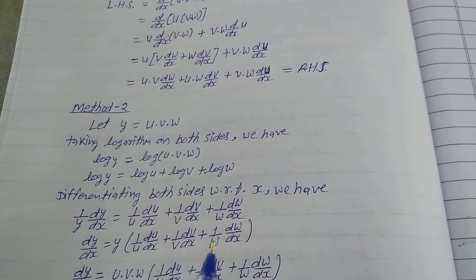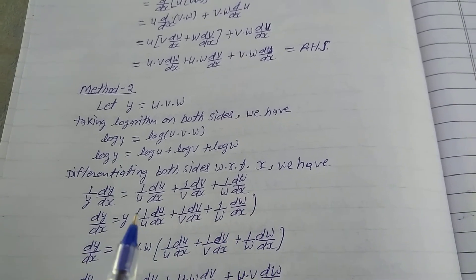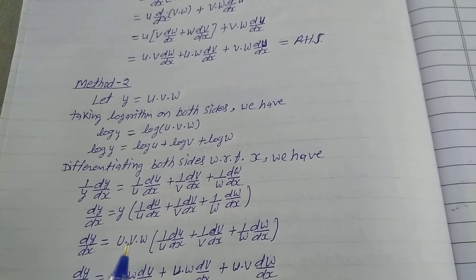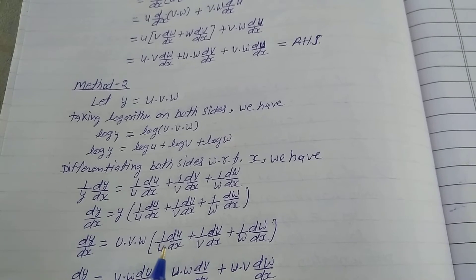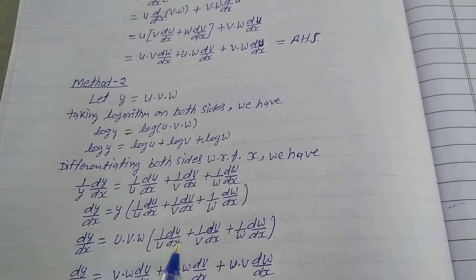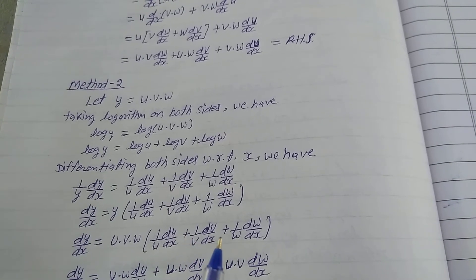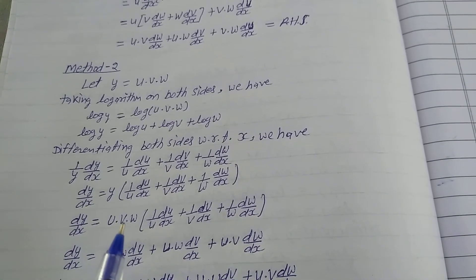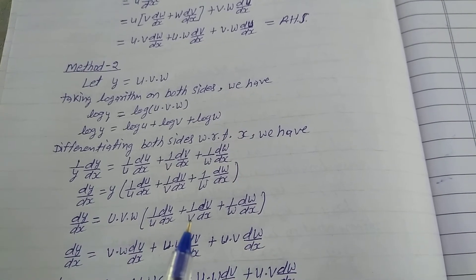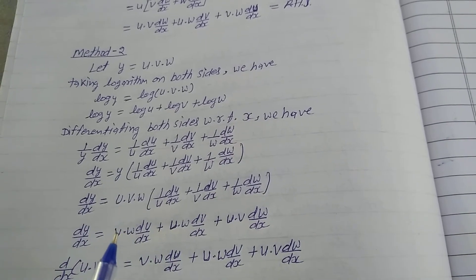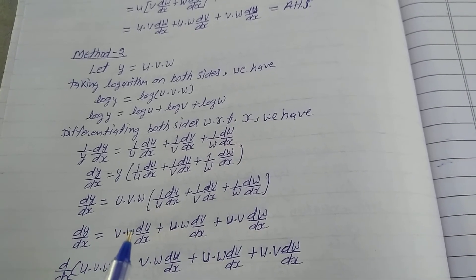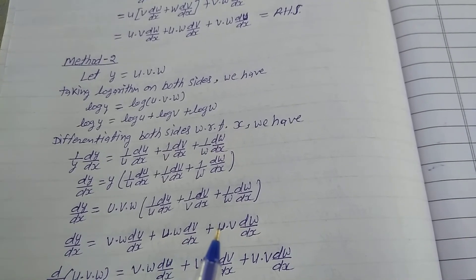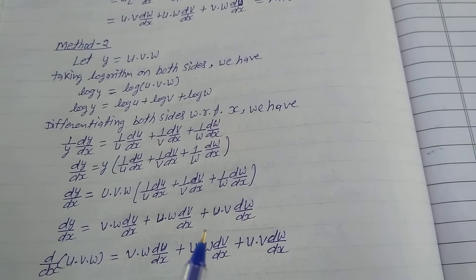Substituting y = u·v·w: dy/dx = u·v·w times [1/u · du/dx + 1/v · dv/dx + 1/w · dw/dx]. Multiplying u·v·w inside the bracket gives: dy/dx = v·w · du/dx + u·w · dv/dx + u·v · dw/dx.